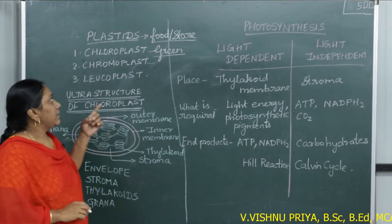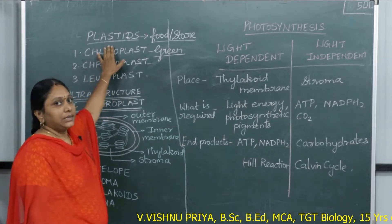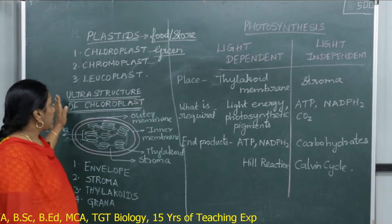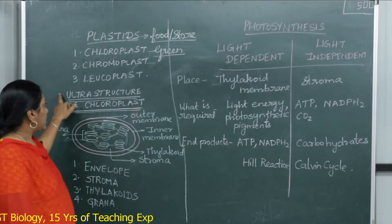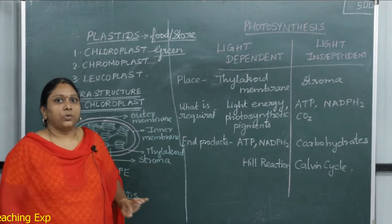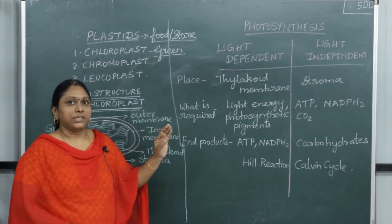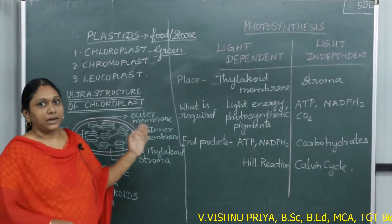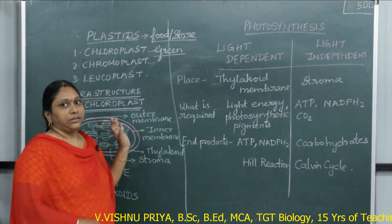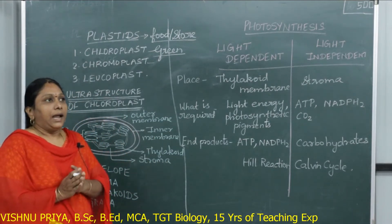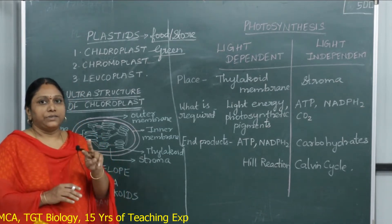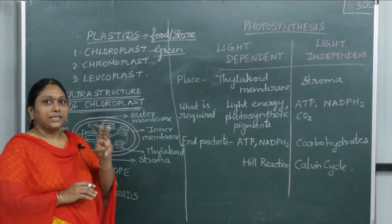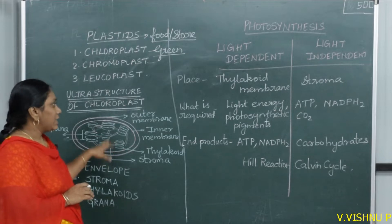Plants are autotrophs — they prepare their own food by a process called photosynthesis, and that food preparation process is done by these plastics. So plastics are meant for preparation and storage of food. Here we will study the ultrastructure of a chloroplast. Chloroplast is an organelle with a double membrane — only two organelles have double membranes: chloroplast and mitochondria.